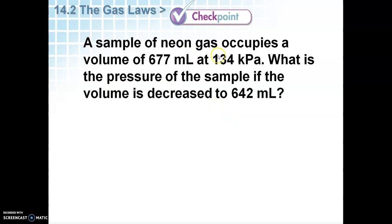We have a sample of neon gas. Who cares it's neon? It's ideal. There's the volume. That's our V1, 677. P1 is the pressure, 134 kilopascals. What's the new pressure? Now we're looking for P2, given the new volume V2 is 642.